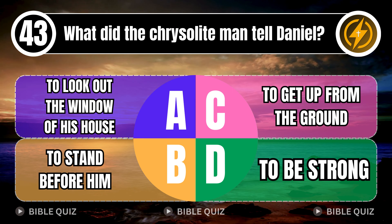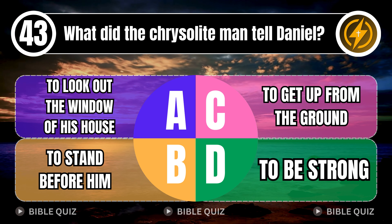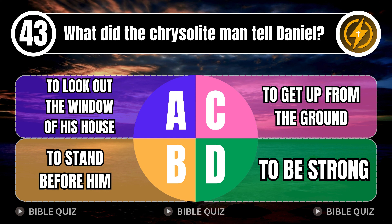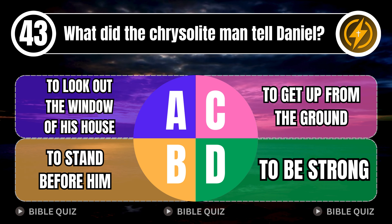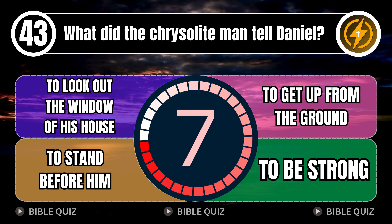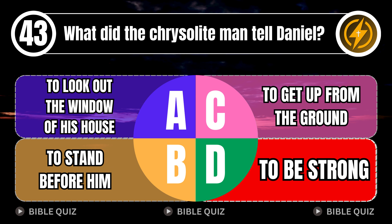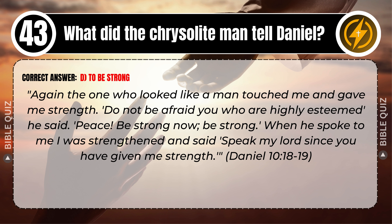Question 43: What did the chrysolite man tell Daniel? A. To look out the window of his house. B. To stand before him. C. To get up from the ground. D. To be strong. Correct answer: D. To be strong. Again the one who looked like a man touched me and gave me strength. 'Do not be afraid, you who are highly esteemed,' he said. 'Peace. Be strong now, be strong.' When he spoke to me, I was strengthened and said, 'Speak, my Lord, since you have given me strength.' Daniel 10 verses 18–19.